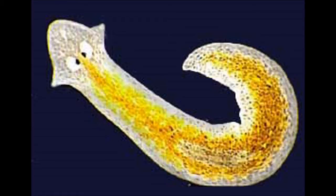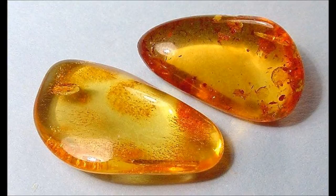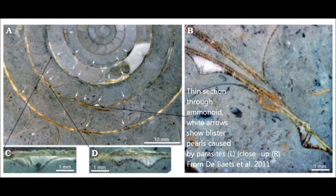Contrast this to the humble flatworm. This group is suspected to have appeared at least 550 million years ago. However, the earliest known fossil record is only 14 million years old, found preserved in amber, which is fossilised tree sap. We know these guys were massively abundant, but because they're all soft-bodied, they don't preserve especially well, and so the record of direct fossils is extremely poor.